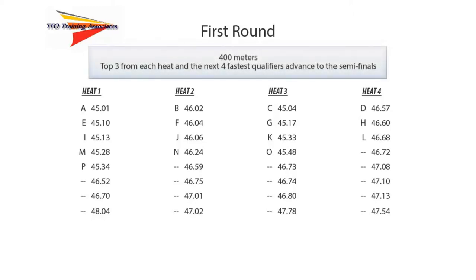The formula for advancement to the semifinals is to take the top three finishers from each heat, plus the next four fastest times. Using the advancement rules and formula, we'll first identify those who have qualified for the two semifinal heats.